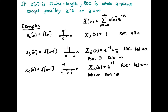Now shift that signal by one: X_B of N equals delta of N minus one. We again have only one term in the sum, but now it's Z inverse, which we write as one over Z. There is a pole at Z equals zero and a zero at infinity, since when Z goes to infinity this expression goes to zero. So the region of convergence is the absolute value of Z greater than zero.